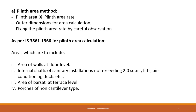In the Plinth Area method, the cost of construction is determined by multiplying the plinth area by the plinth area rate. The area is obtained by multiplying length and breadth — taking the outside dimensions of the building. When fixing the plinth area rate, careful observation and necessary inquiries are made regarding quality and quantity of materials and labor.